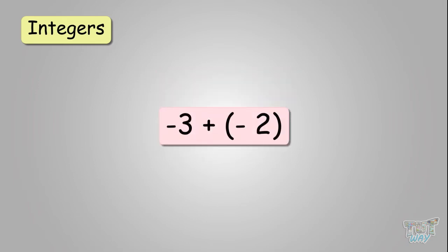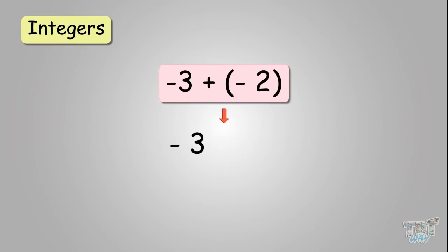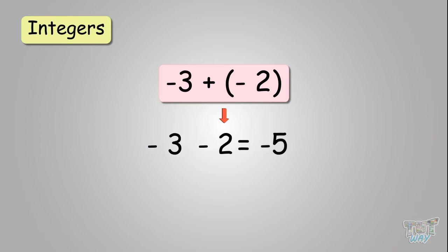Now let's do negative three plus negative two. When you have a positive and a negative together, the sign becomes negative. So it becomes negative three minus two. Now you have two similar signs — minus and minus — so the result will be negative. The answer is negative five.